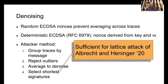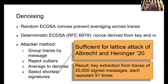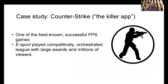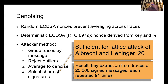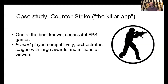For the shortest signatures we know many of the leading bits, and once we have enough traces with known signatures and leading bits of the nonce, we can apply the lattice attack of Albrecht and Henniger. We were able to extract the key from traces of 20,000 signed messages, each repeated 91 times, and the key extraction happened in about 20 minutes once all the traces were collected.